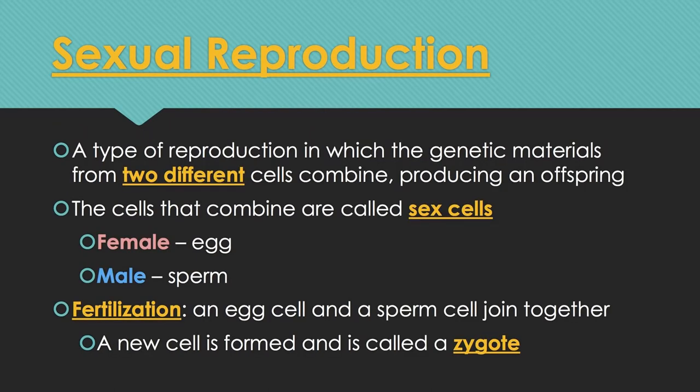We're going to start with sexual reproduction, which is a type of reproduction in which the genetic materials from two different cells combine, producing an offspring. That means there are always two parents in sexual reproduction. The cells that combine are called sex cells — the female sex cell is called the egg and the male sex cell is called the sperm, not just in humans but in any sexually reproducing organism.